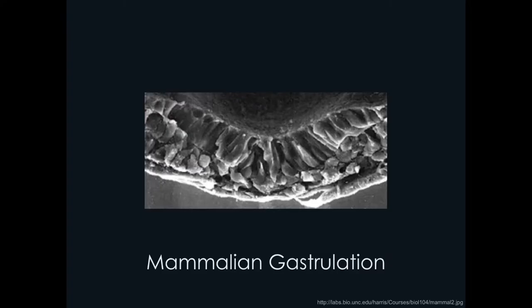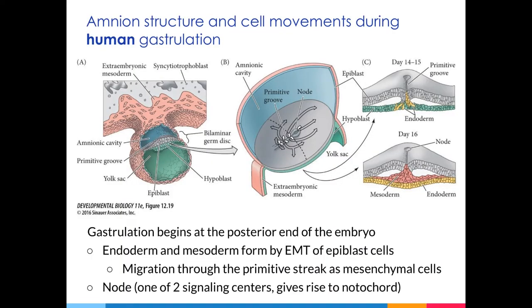Gastrulation in humans and mice occurs in slightly different ways, so we're going to talk about each of those separately. Even though the mammalian egg does not have a large amount of yolk, the gastrulating egg is still positioned as if it were on top of a mass of yolk, because the inner cell mass or ICM can be thought of as sitting on an imaginary ball of yolk. The ICM gives rise to the epiblast and the primitive endoderm, also known as the hypoblast. The epiblast will give rise to the embryo, the amnion, and the allantois, while the primitive endoderm or hypoblast will give rise to the yolk sac.